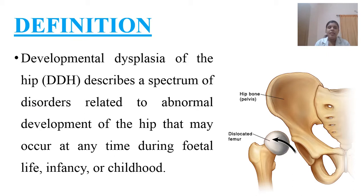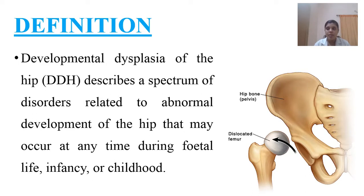Developmental dysplasia of the hip, or DDH, is defined as a group of disorders developing due to abnormal development of the hip. This abnormal development can occur at the time of intrauterine life, at the time of delivery, or later during infancy or childhood. It is not a single disorder but a group of disorders arising from developmental abnormalities.